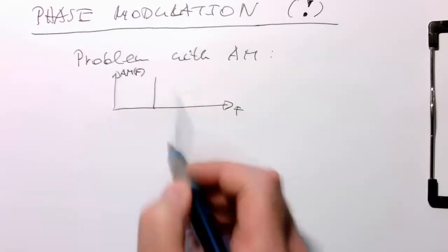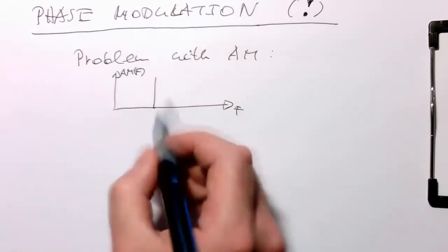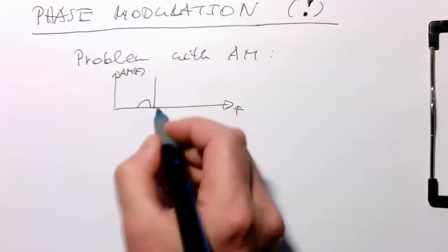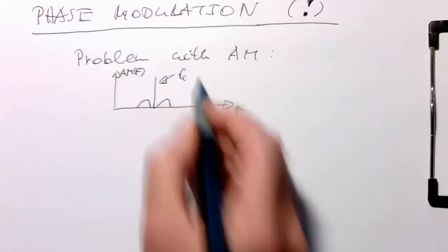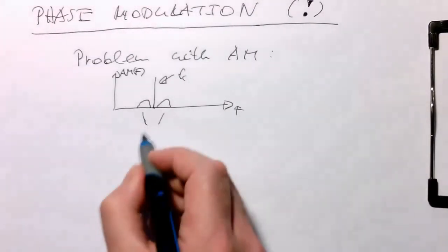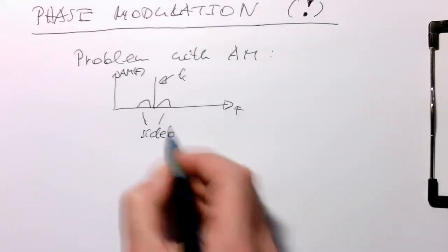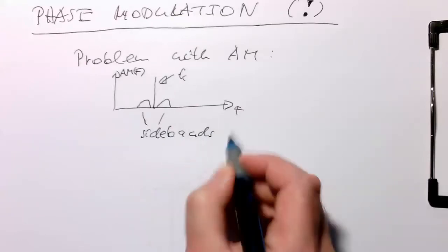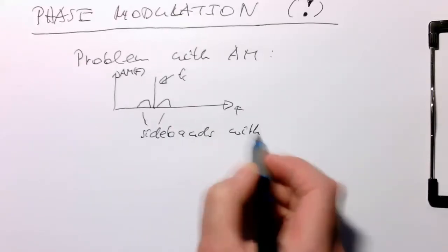So we've got this huge carrier in the middle and then these sidebands which are carrying the information. So this was here FC, this was our carrier and these are the sidebands with the information.